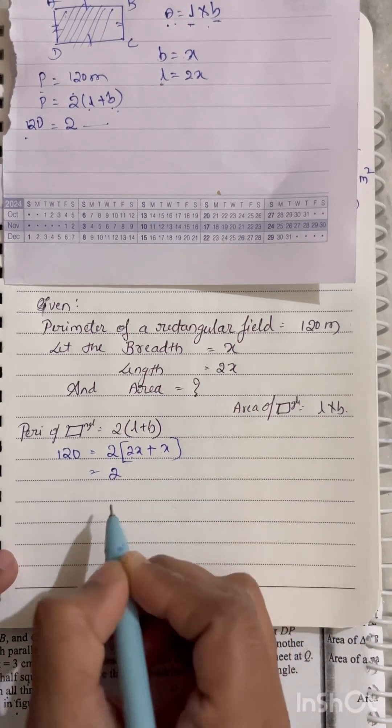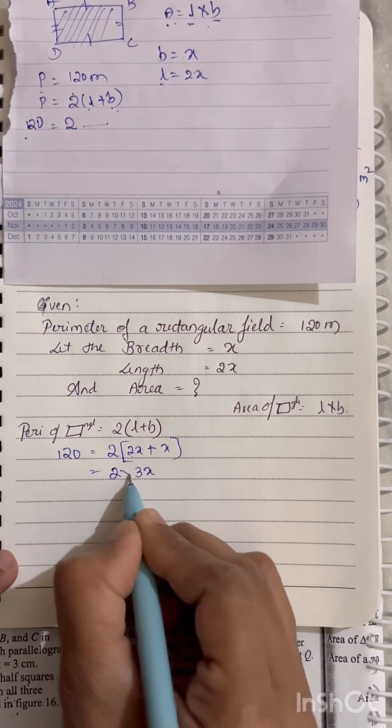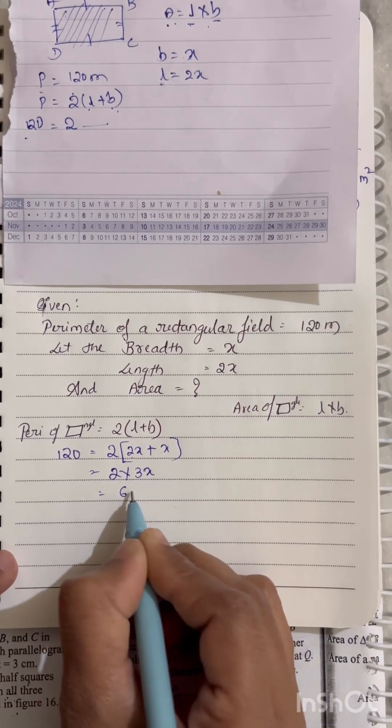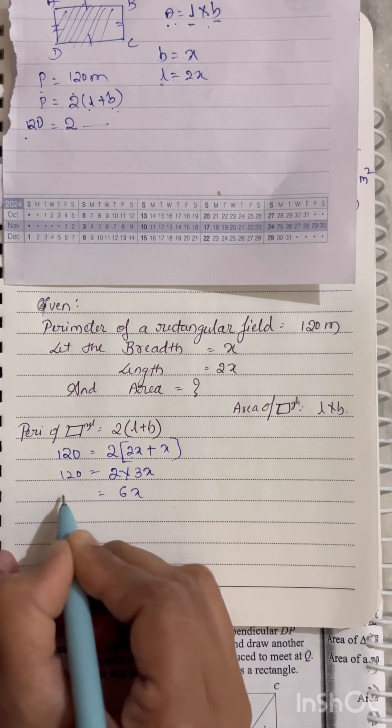Now see here, 2X plus X is 3X. Multiplication: 2 times 3X is 6X. And this side, 120 will be as it is.